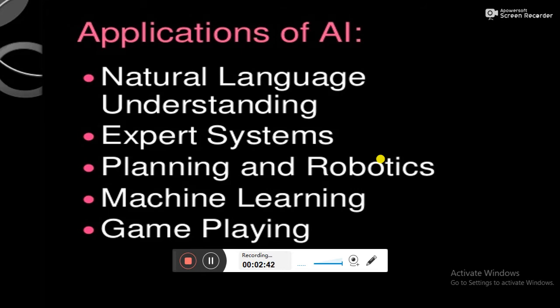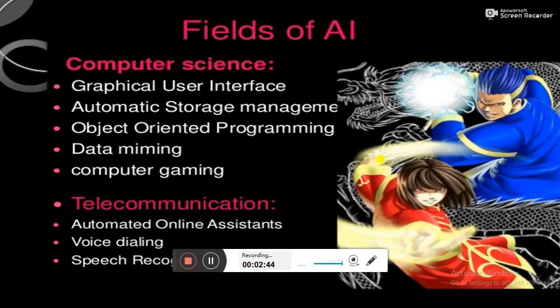Here are the fields of artificial intelligence: computer science, graphical user interface, automatic storage management, object-oriented programming, data mining, and computer gaming. It is also used in telecommunications, automated online assistance, voice dialing, and speech recognition.